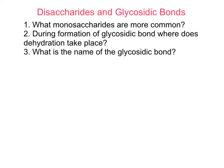Disaccharides consist of two monosaccharide residues, either the same or different, joined by a glycosidic bond. We can visualize the formation of a glycosidic bond as a dehydration reaction between the hydroxyl group on one of the anomeric carbons and an alcohol group from the second monosaccharide unit.